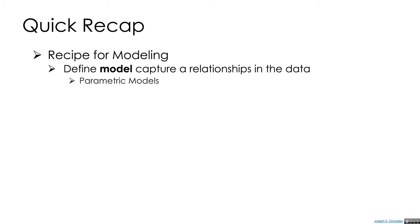A quick recap of where we are. In the previous lectures, we discussed a recipe for building a model. The first step in that recipe is to find a model which captures relationships in our data. We looked at parametric models, which are characterized by a fixed parametric form with parameters that we need to optimize. We also looked at non-parametric models, which may have parameters but whose size or complexity grows with our data.